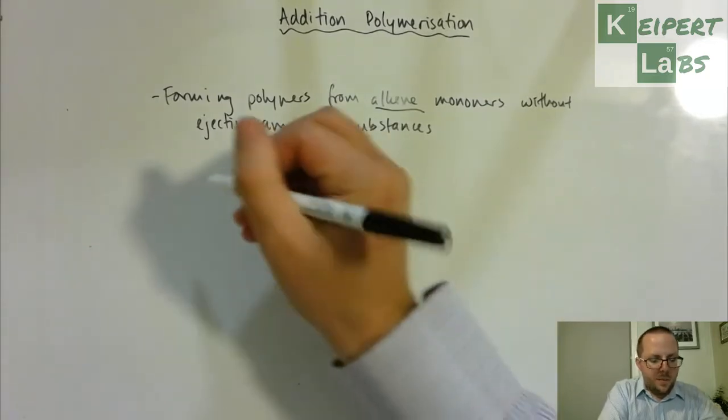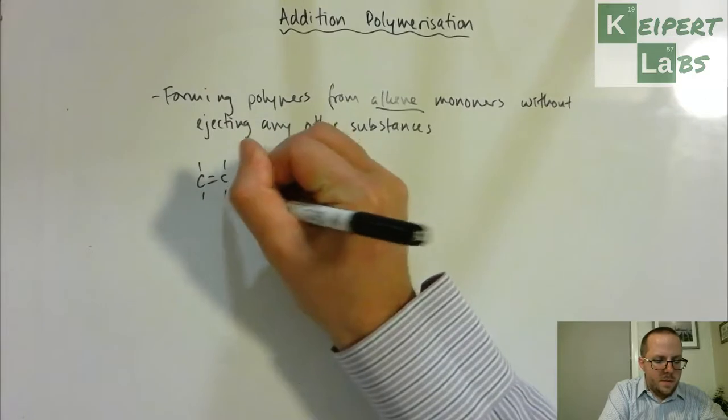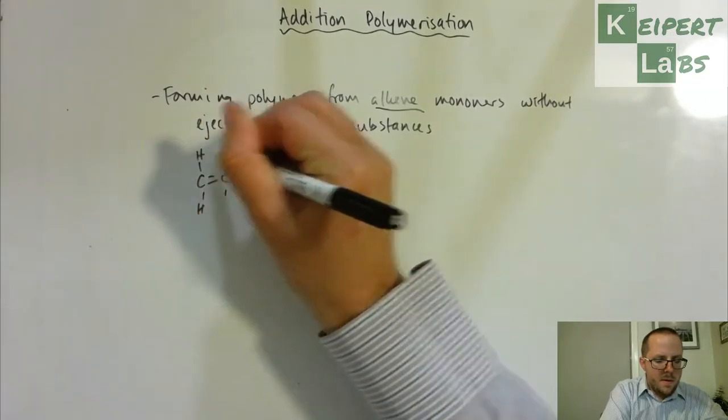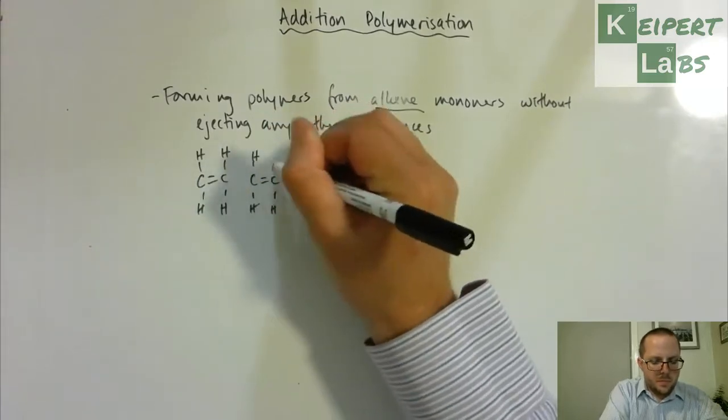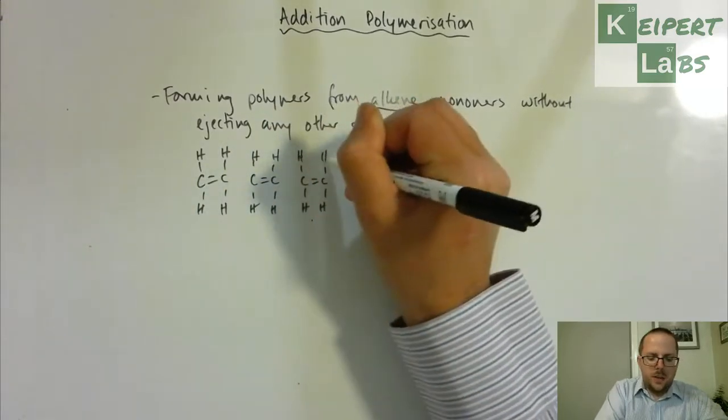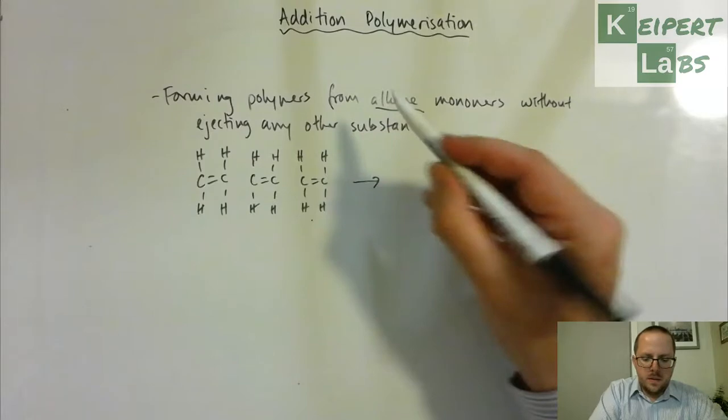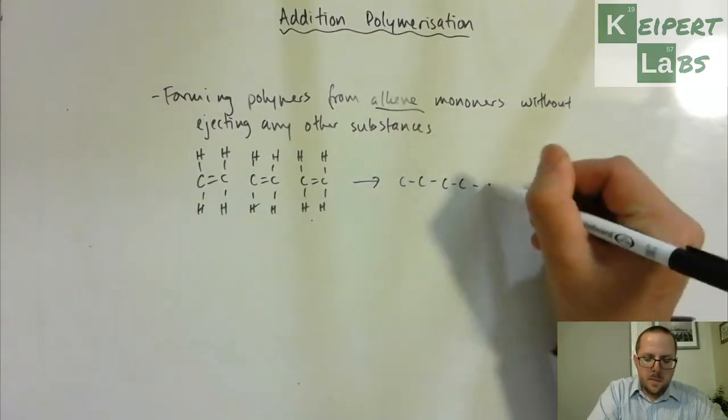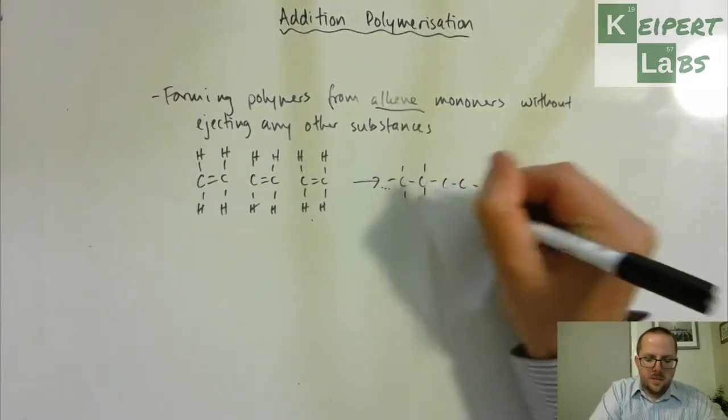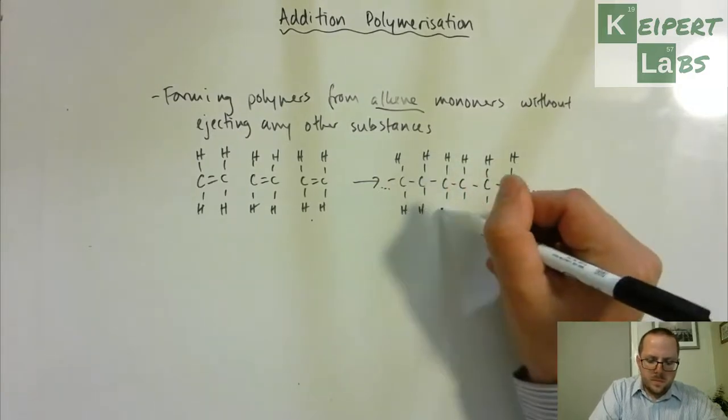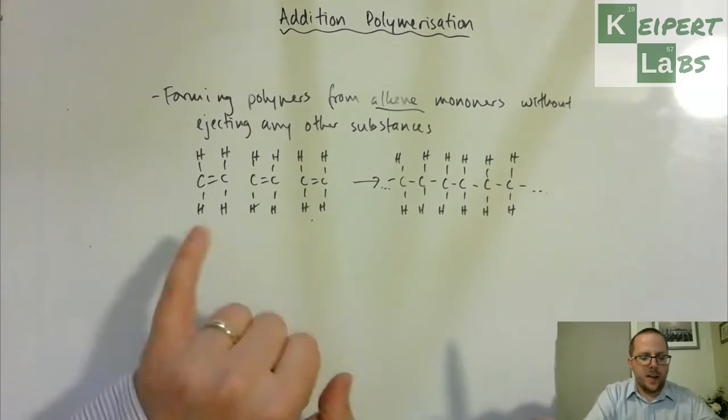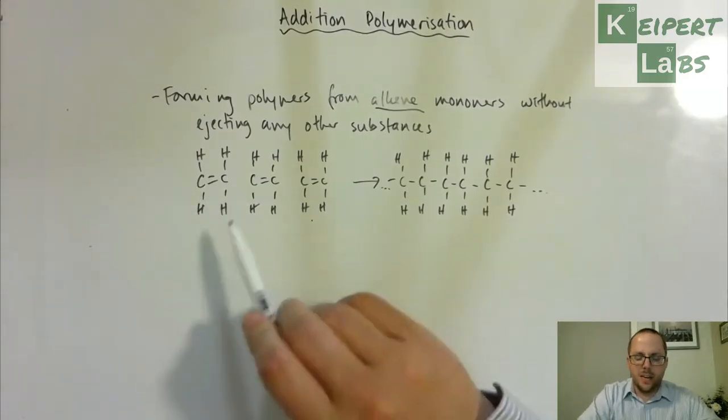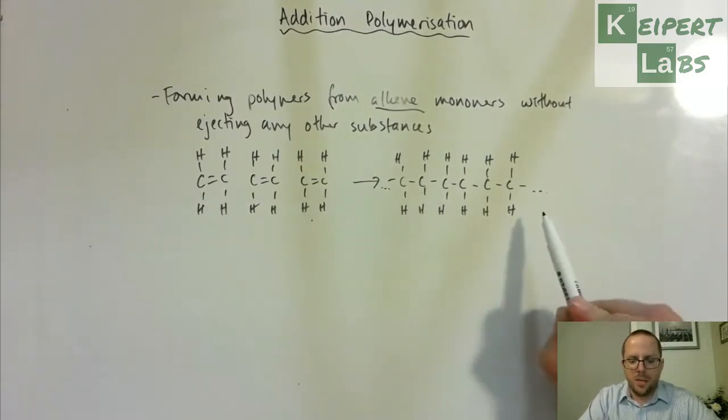So say we're taking ethylene, ethylene monomers, I'll draw a series of them here, and turning them into a long chain alkane structure. So we've got these as our alkenes, which contain that carbon-carbon double bond, connecting together to form a longer chain polymer.